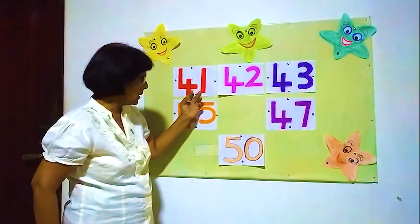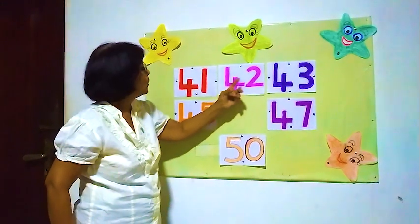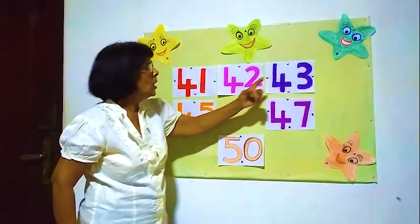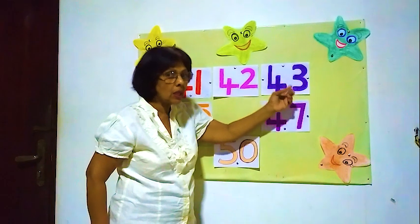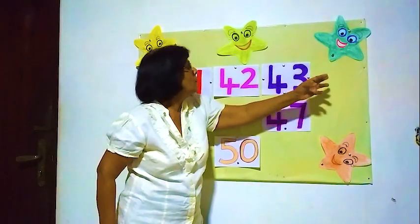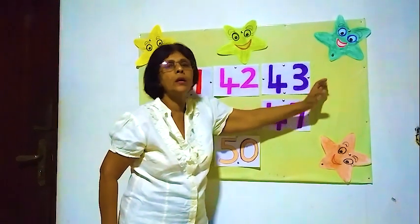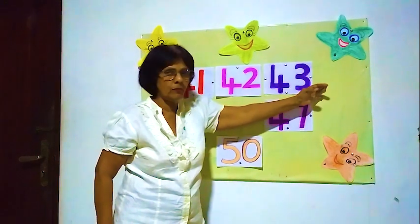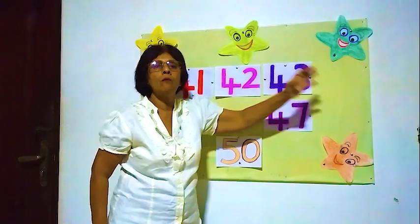Let's count: 41, 42, 43, 44. Right. Now we have to find 44. That's 4 and 4.